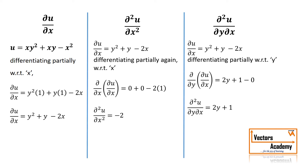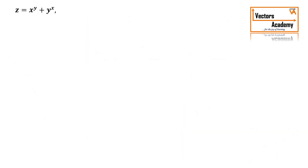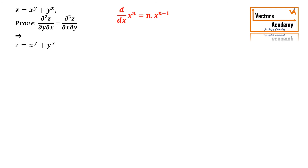This is how we find higher order derivatives. Let's take an example to understand this even better. We have z equal to x raised to y plus y raised to x, and we need to prove that del squared z upon del y del x equals del squared z upon del x del y. On the left-hand side, we first differentiate with respect to x and then with respect to y. So let's differentiate z partially with respect to x.